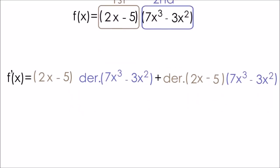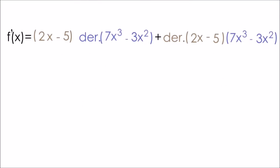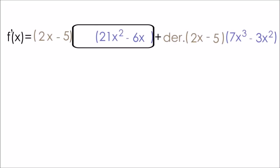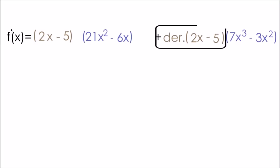All right, so now we just need to simplify this as much as possible. So I'll start by taking the derivative of 7x cubed minus 3x squared. The derivative of 7x cubed is 21x squared. And the derivative of negative 3x squared is equal to negative 6x. And if we move to the right, now we can take the derivative of 2x minus 5. The derivative of 2x is just 2. The derivative of negative 5 is equal to 0. So this just simplifies to 2.